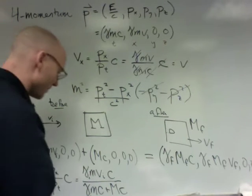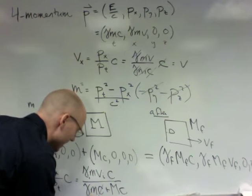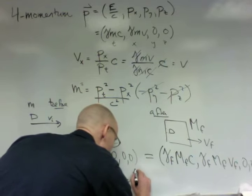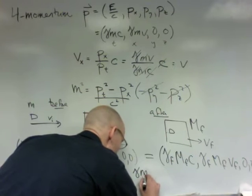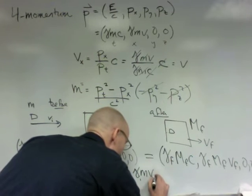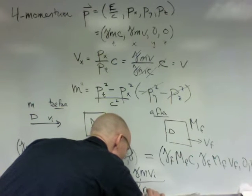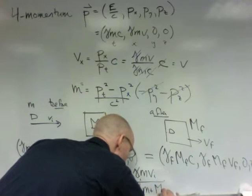Good, now if I can simplify this a little bit, because I can take out the c's, and I get that this is gamma m, gamma imvi over gamma im plus m.